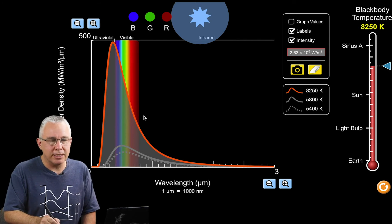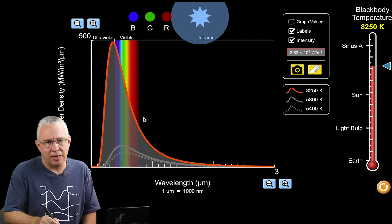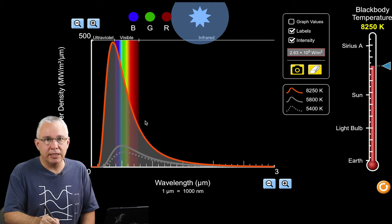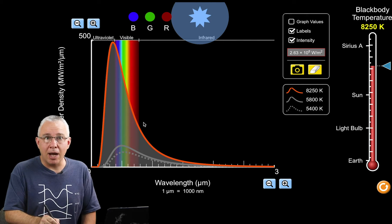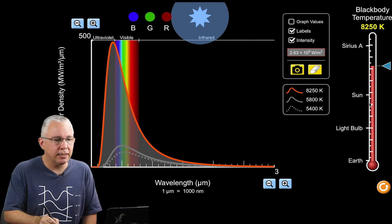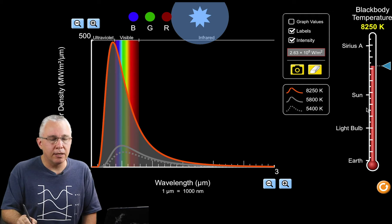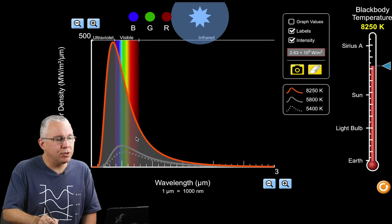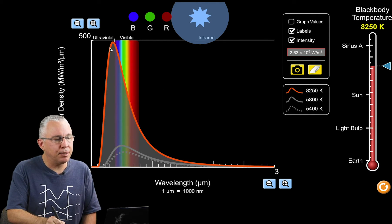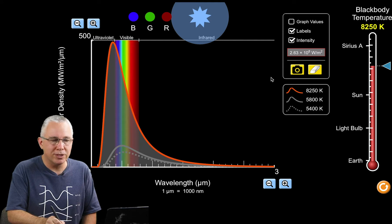You see the total intensity is greater. A hot blue star is significantly brighter, has greater intensity than cooler stars such as our sun and even cooler stars such as red dwarfs. The peak has moved more and more towards the left.